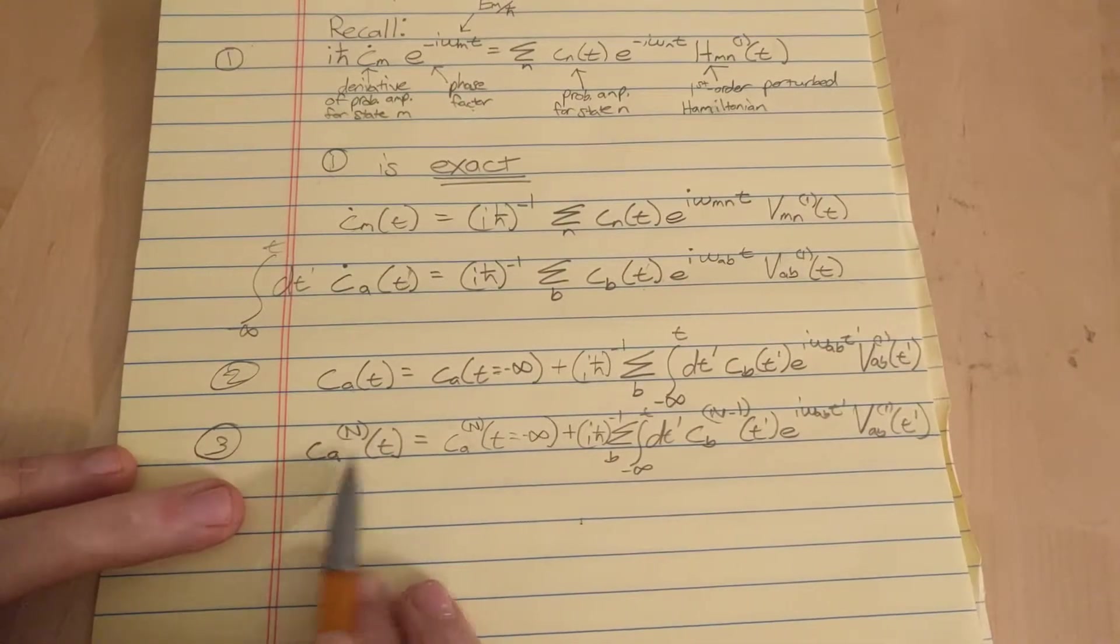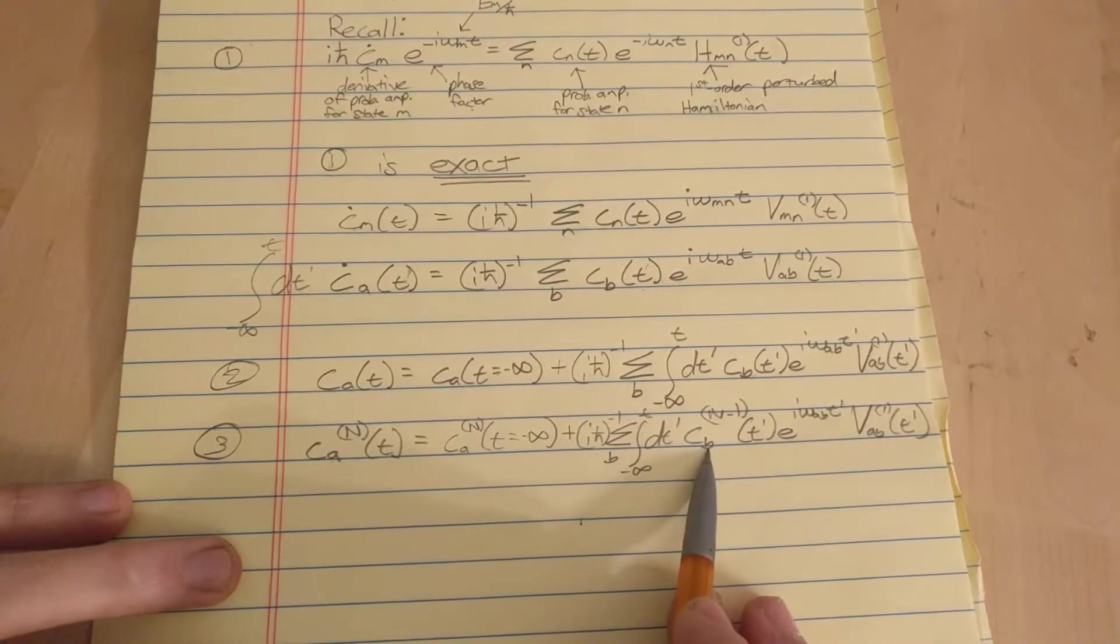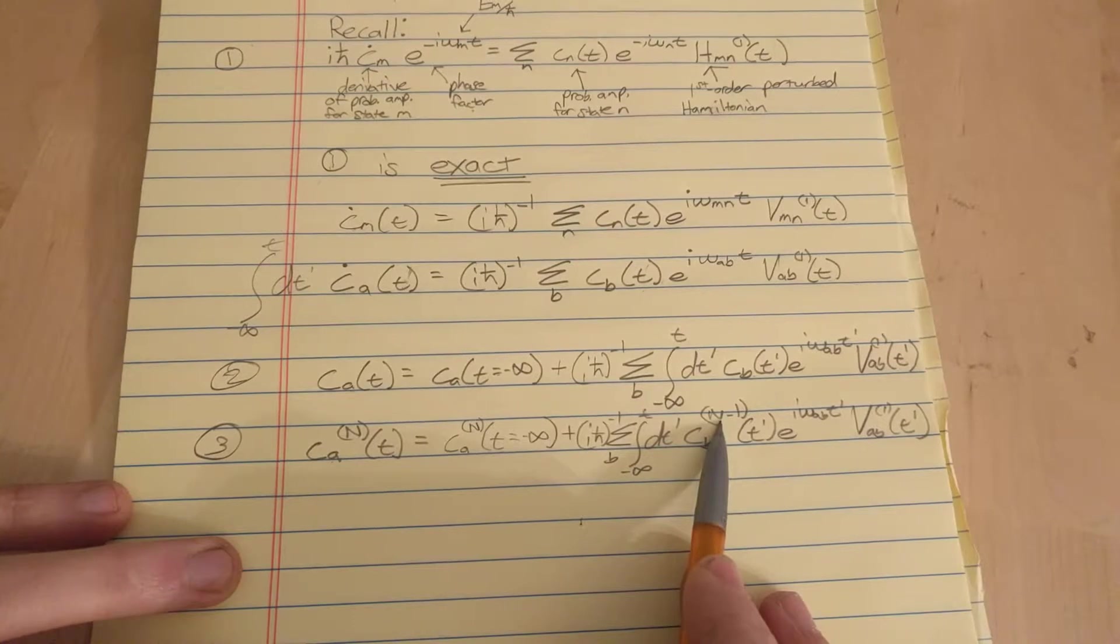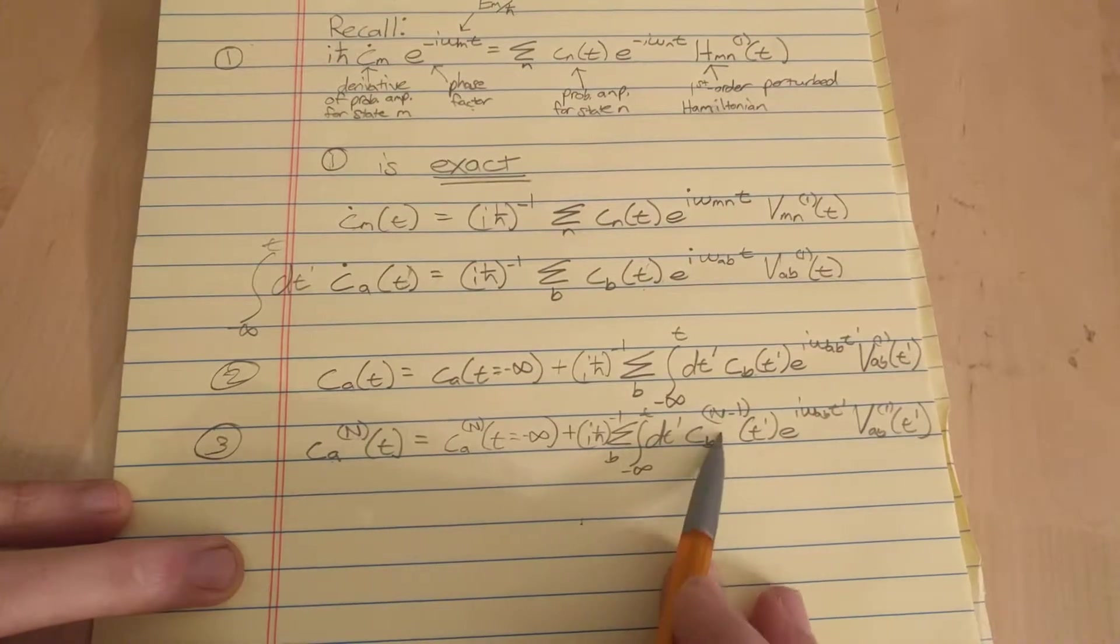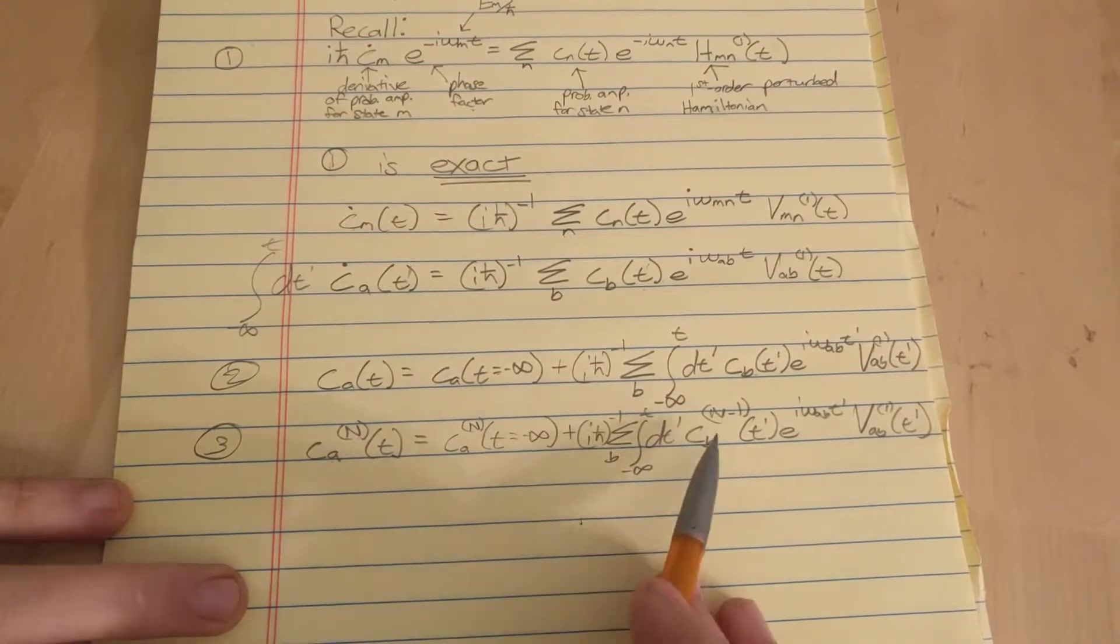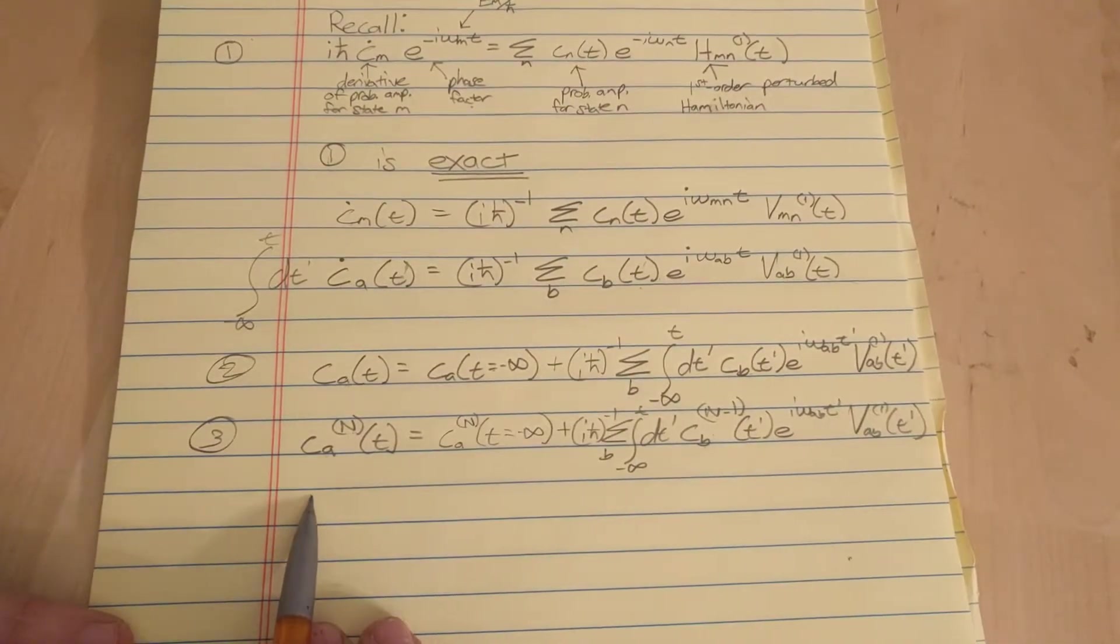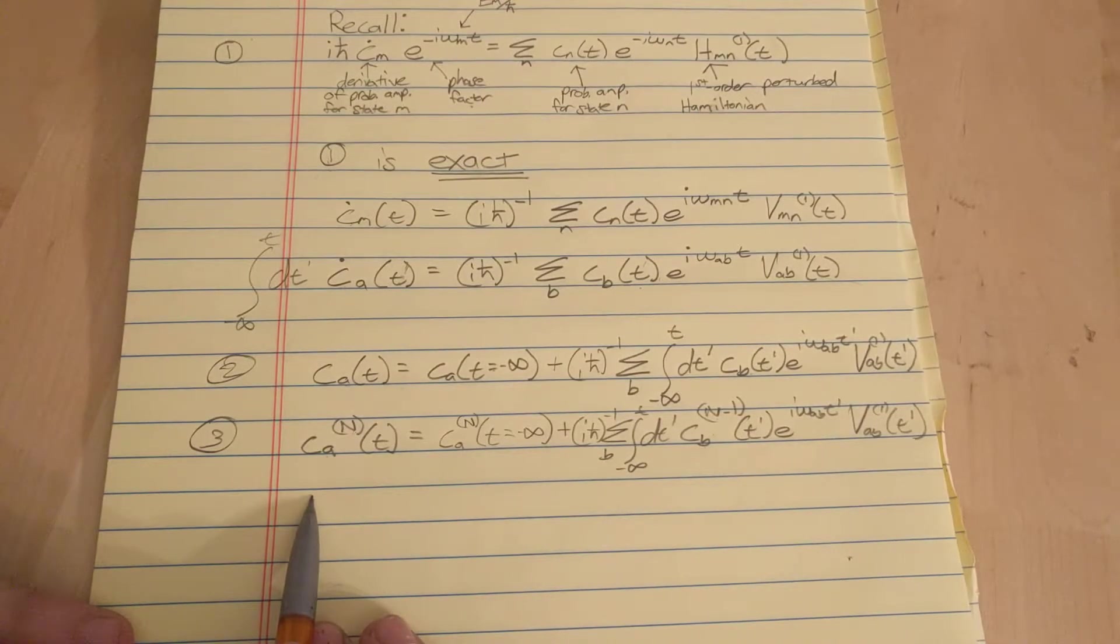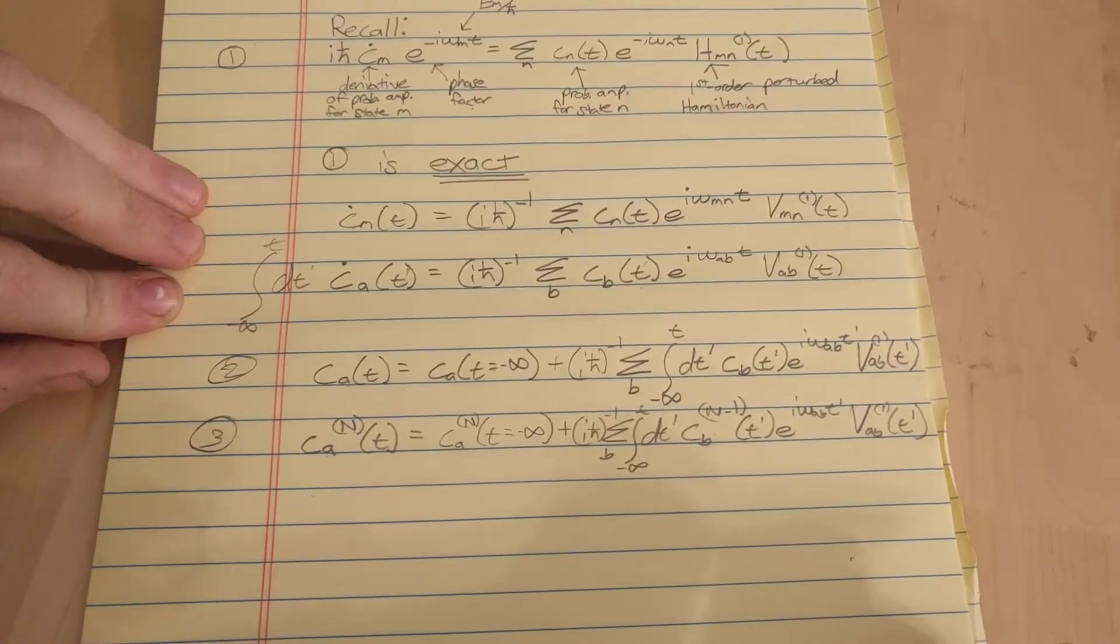This is all I mean by that. c a is perturbed up to order n, c b is perturbed up to order n minus 1. So we start by knowing the zeroth order perturbation, and we can find the first order perturbation by plugging in the zeroth one here. And similarly, we can find the second order perturbation by plugging in the first order one here, so on and so forth. And we're assuming that the series is converging, so that each higher order perturbation is getting smaller and smaller. So it sort of matters less and less. The most important one is the zeroth and first order perturbations.